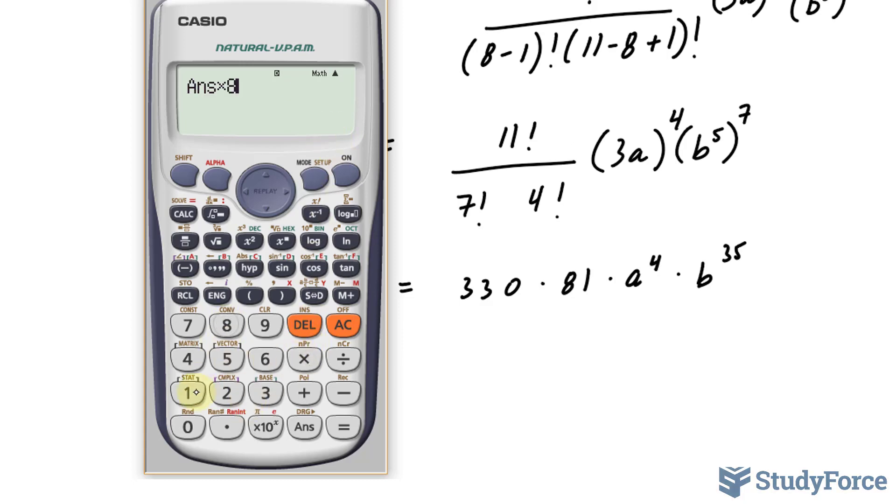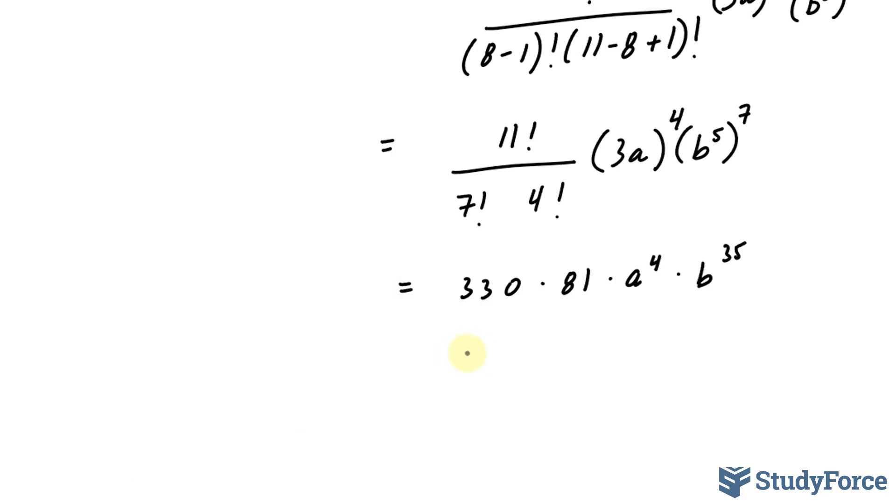This number multiplied to 81 gives us 26,730. 26,730 a to the power of 4, b to the power of 35. That represents our final answer.